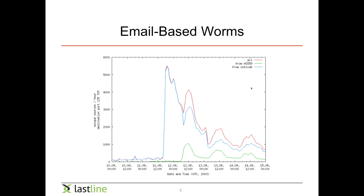If you plot how a worm spreads over the network, a graph showing unique sources per hour — with destination port 135 in the case of a classic old worm — shows you might see little activity initially, but suddenly there's a huge spike where the worm becomes active and starts scanning. You'll notice the infection rate goes down at midnight when less people are reading emails, but you see sudden spikes around noon when people come back from lunch and tend to read emails. This email-based worm shows a classic distribution pattern.